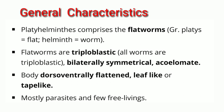Let us discuss the general characteristics of phylum Platyhelminthes. Platyhelminthes comprises the flatworms. It is made up of two words: 'platys' meaning flat and 'helminth' meaning worm. Flatworms are triploblastic, that is they have three germ layers: ectoderm, mesoderm and endoderm.